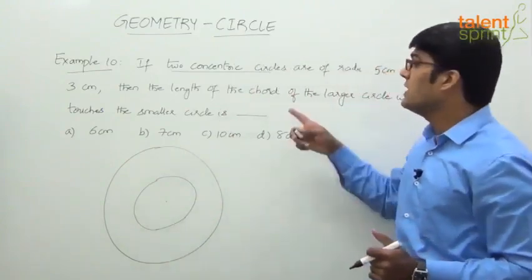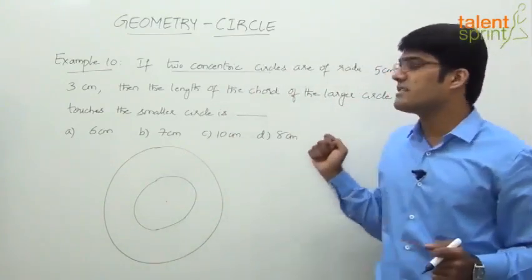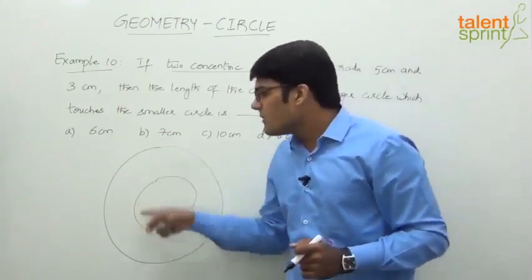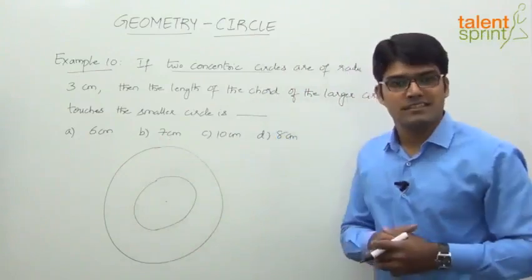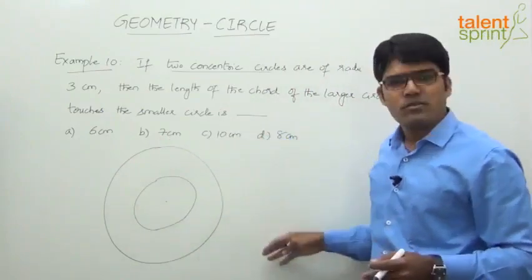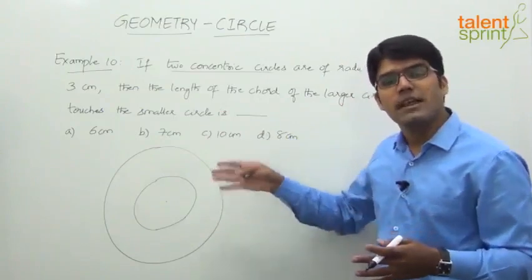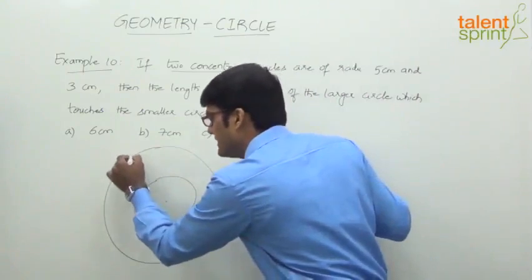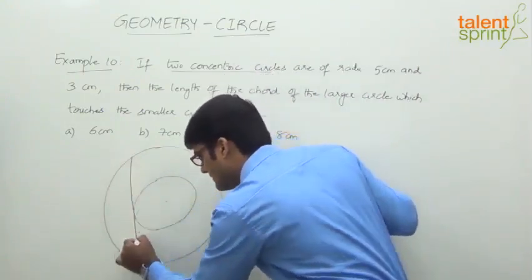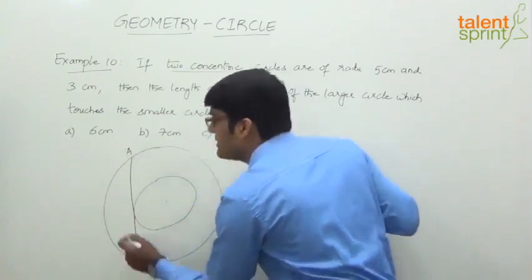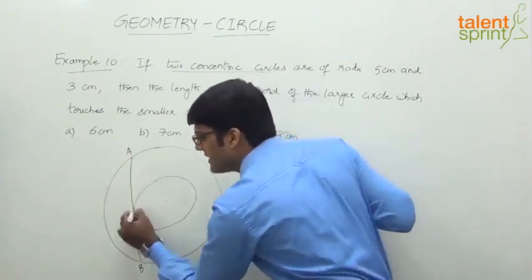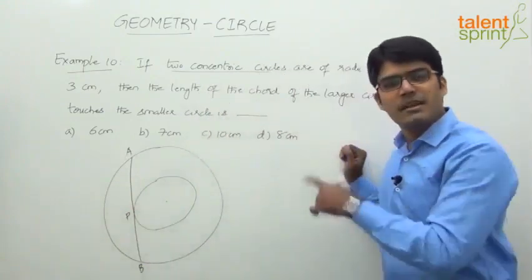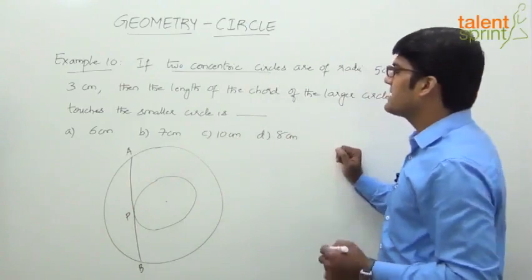For the inner circle the radius is 3, and for the outer one the radius is 5. Now, an interesting point about such a case is that the chords of the larger circle will become the tangents of the smaller circle. You can draw many chords for the larger circle and all of those will become tangents for the smaller one. For example, if I draw a chord AB in the larger circle, it touches the smaller circle only at one point — let's say point P — it becomes a tangent for the smaller one.